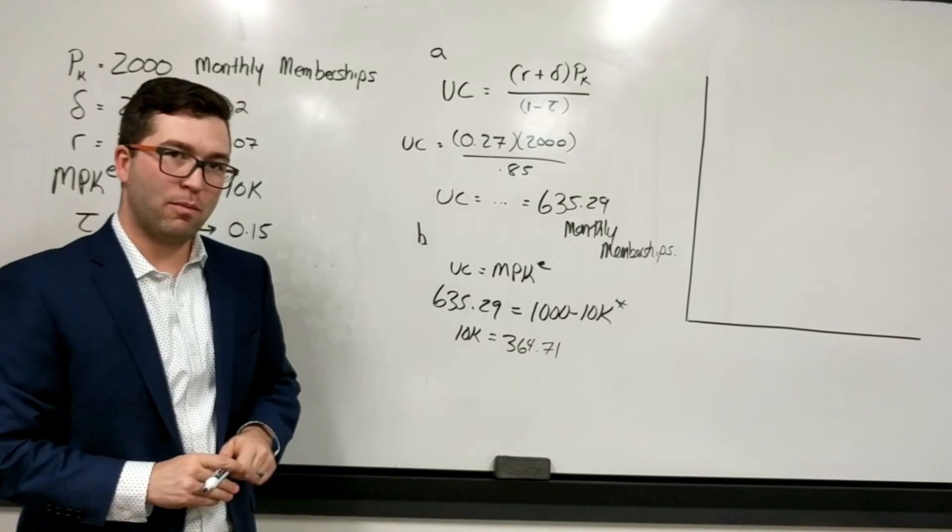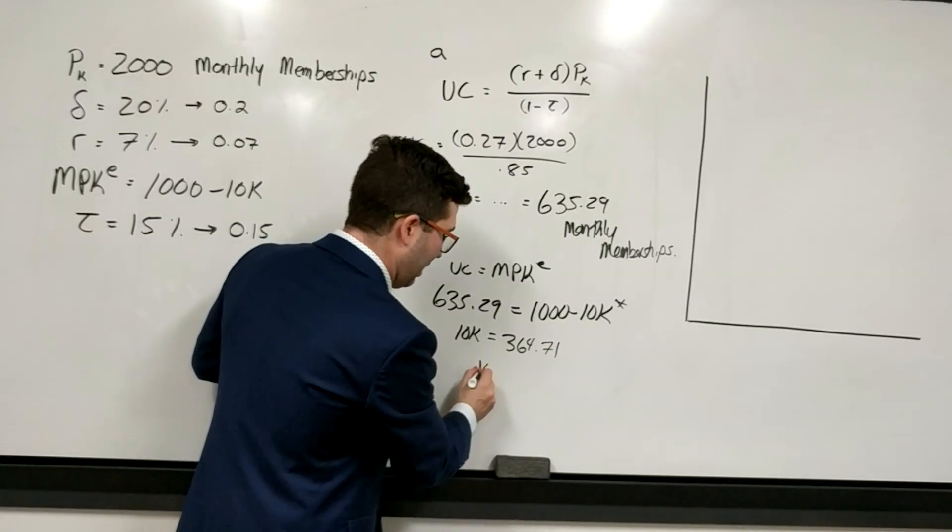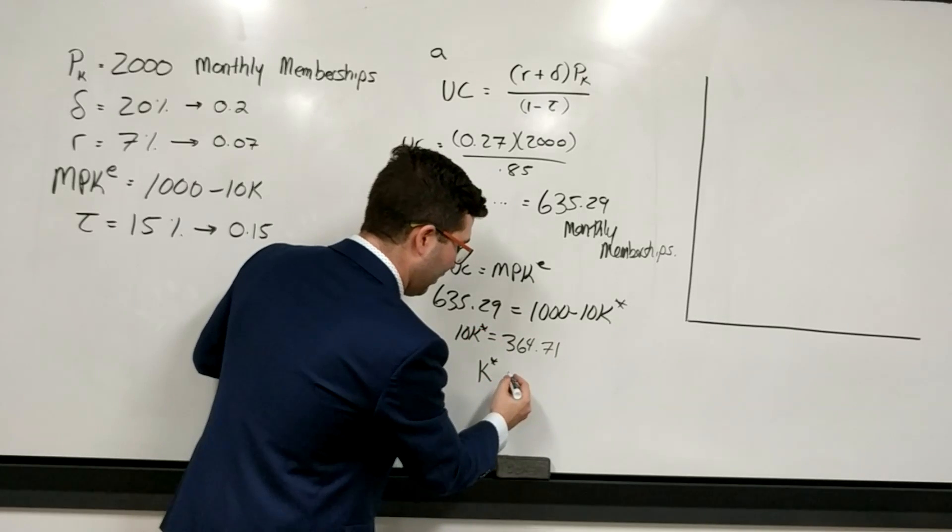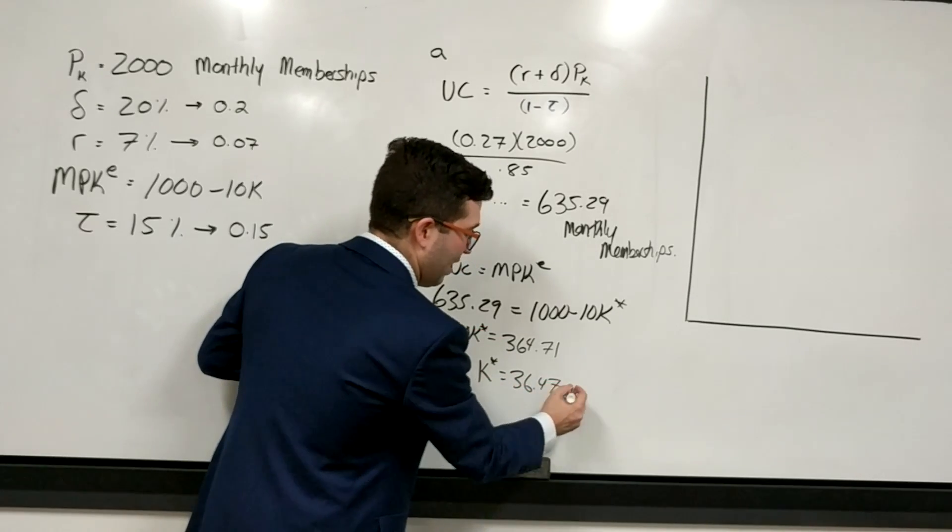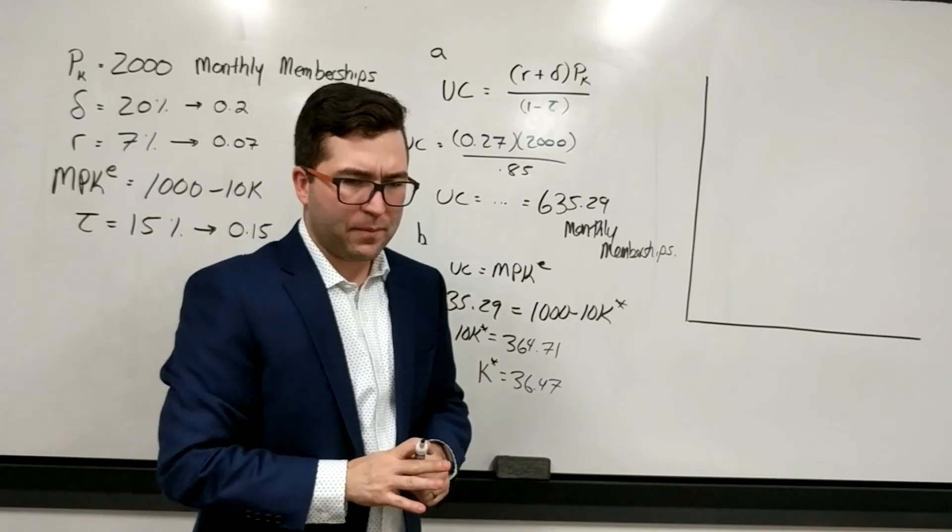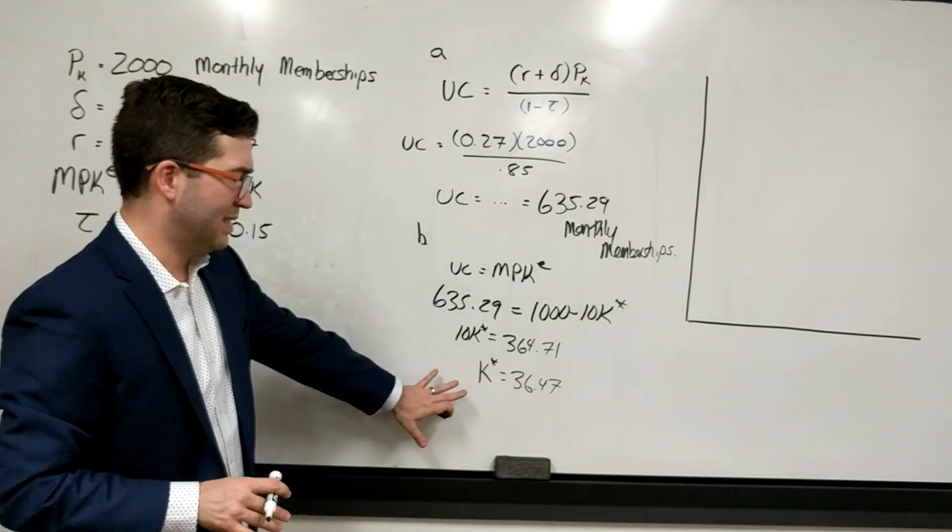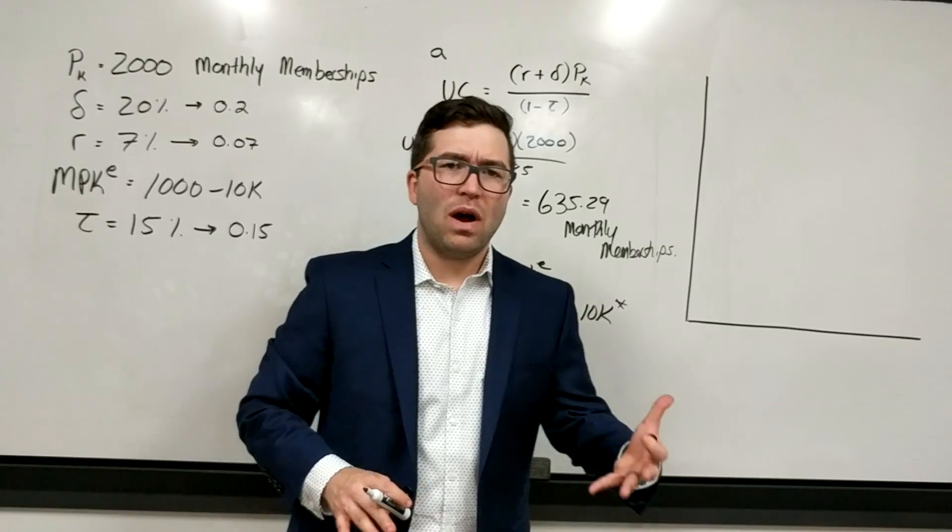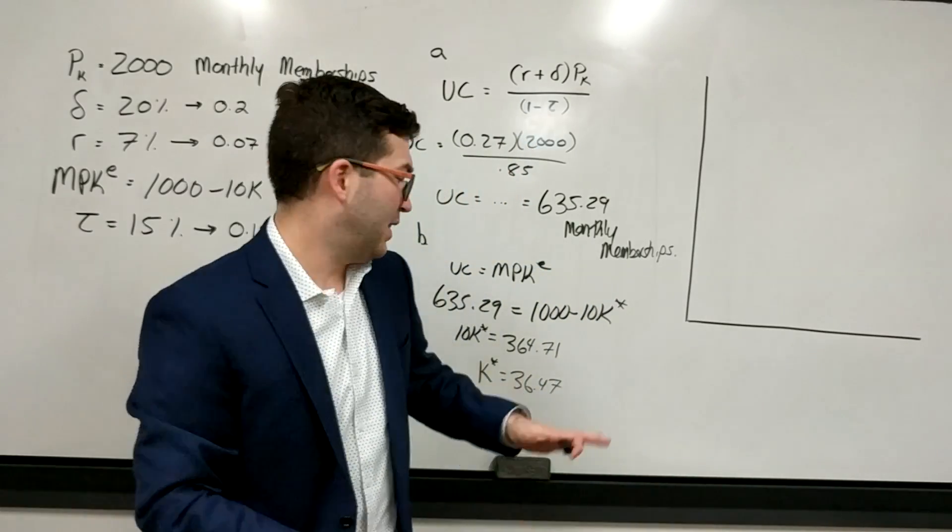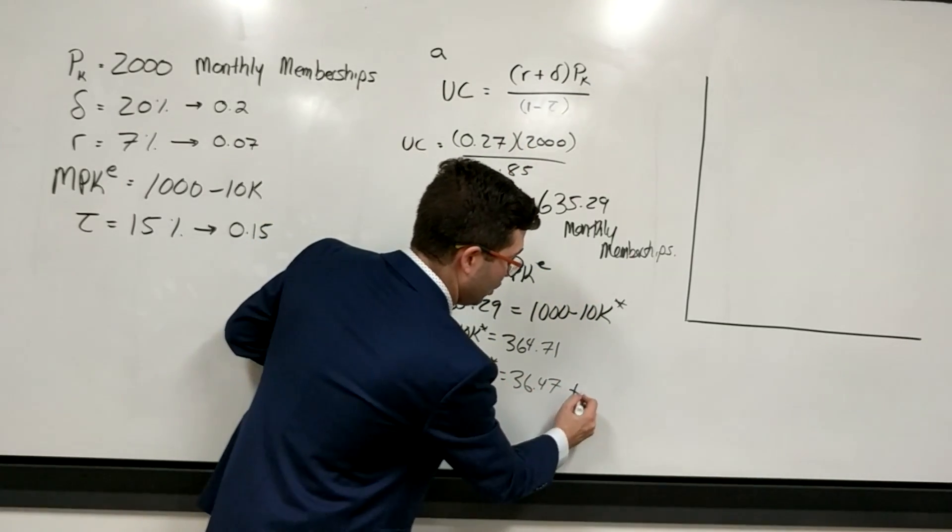364.71. Divide both sides, we're going to get my K star is going to be equal to 36.47. And I believe the worksheet doesn't tell you what to round it to. We're just going to round it to two decimal places. Now, a lot of students ask me, well, why are you saying 0.47? This is treadmills.